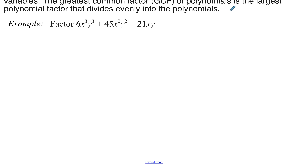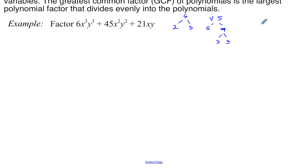If you were to use your factor tree and break down 6 into its prime factors, its prime factors are 2 and 3. Then 45 has factors of 5 and 9, and 9 can be broken down into 3 and 3. And 21 can be broken down into 3 and 7.